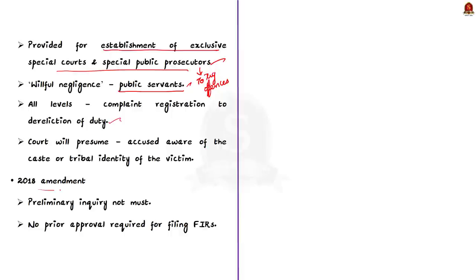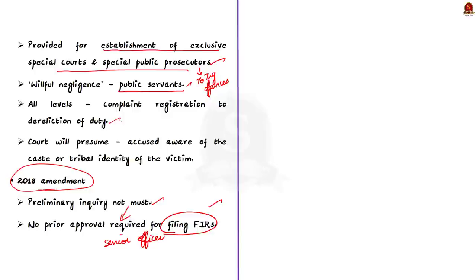The 2018 amendment clarified that a preliminary inquiry is not a must, and no prior approval is required from appointing authorities or senior police officers to file FIRs in cases of atrocities on SC and ST. That concludes the discussion on the SC and ST Prevention of Atrocities Act — covering its reasons for enactment, features of the act, and amendments made.